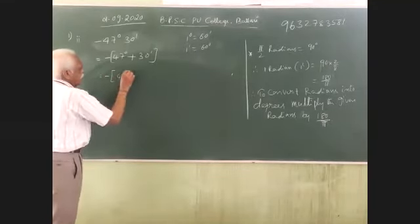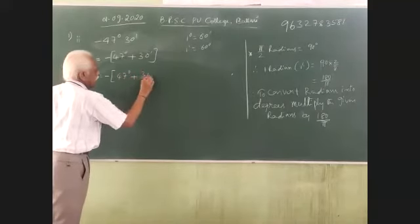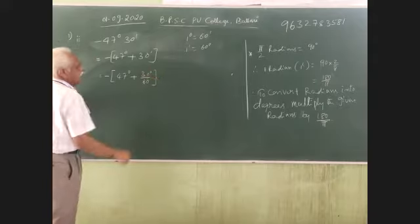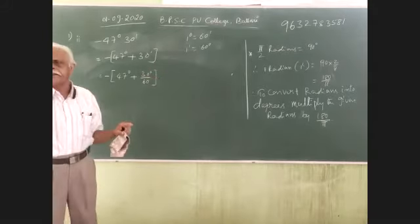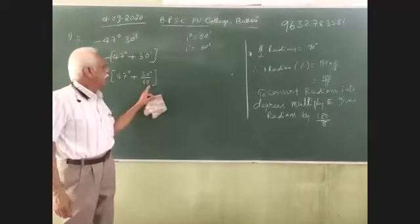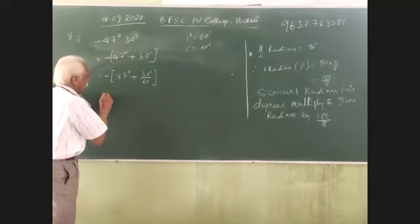Minus 47 degrees plus 30 by 60. To convert minutes into degrees, write minutes by 60. 30 by 60 is 1 by 2.